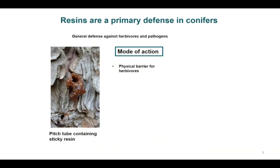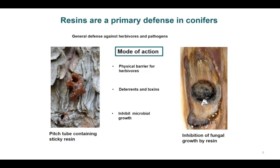Terpenes act as a physical barrier for burrowing insects such as bark beetles. Pitch tubes containing sticky resin are immediately formed around the wounded site, stopping the movement of herbivores by paralyzing them. Terpenes also act as a feeding deterrent and can repel insects from the host tree. Terpene vapors also act as a neurotoxin causing immediate death of insects. Terpenes can also inhibit microbial growth — resin droplets form at the leading edge of the mycelium, inhibiting the growth of microbes.